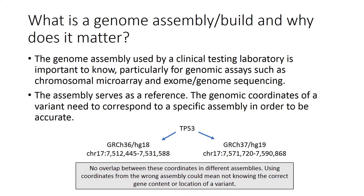The genome assembly that a laboratory uses for a test is important to know, particularly for genomic assays such as chromosomal microarray and exome genome sequencing. The assembly serves as a reference to which the genomic coordinates correspond. If you are given the genomic coordinates for a reported variant, which would be standard practice for copy number variants identified by microarray, you must know what assembly was used in order to accurately use the coordinates in genomic tools.